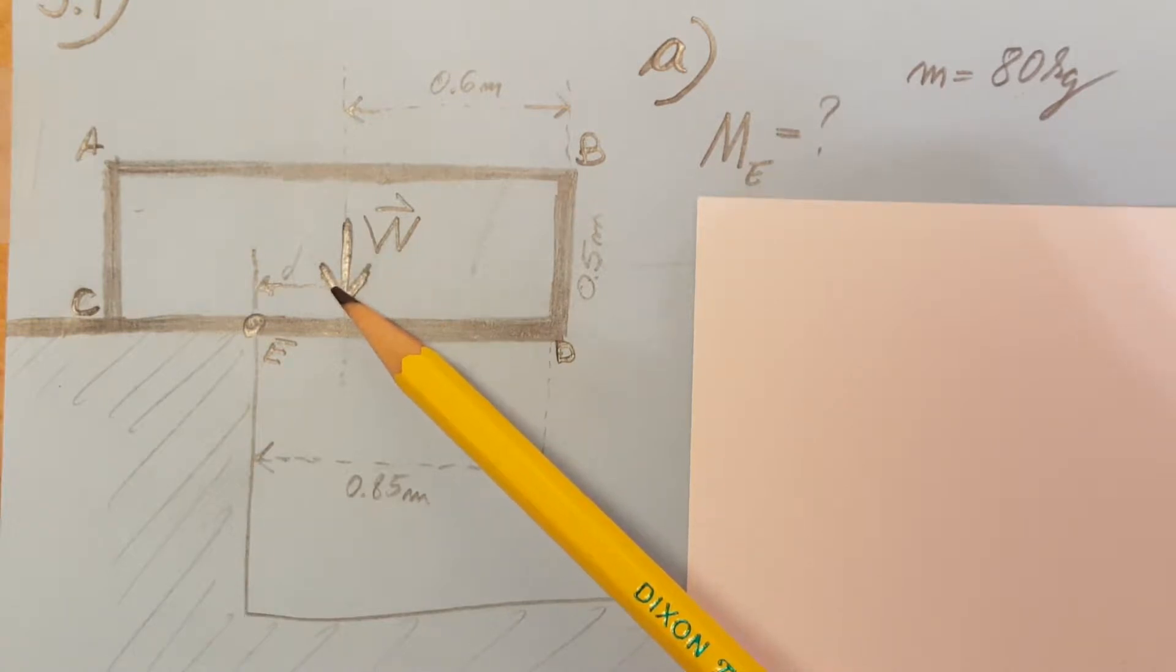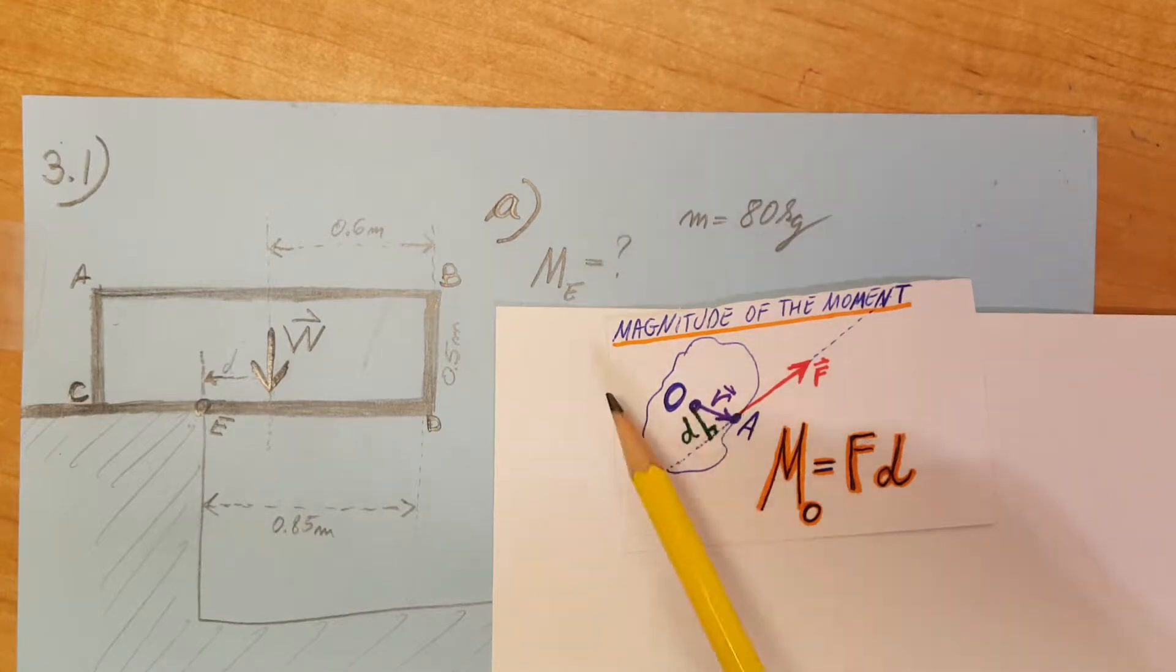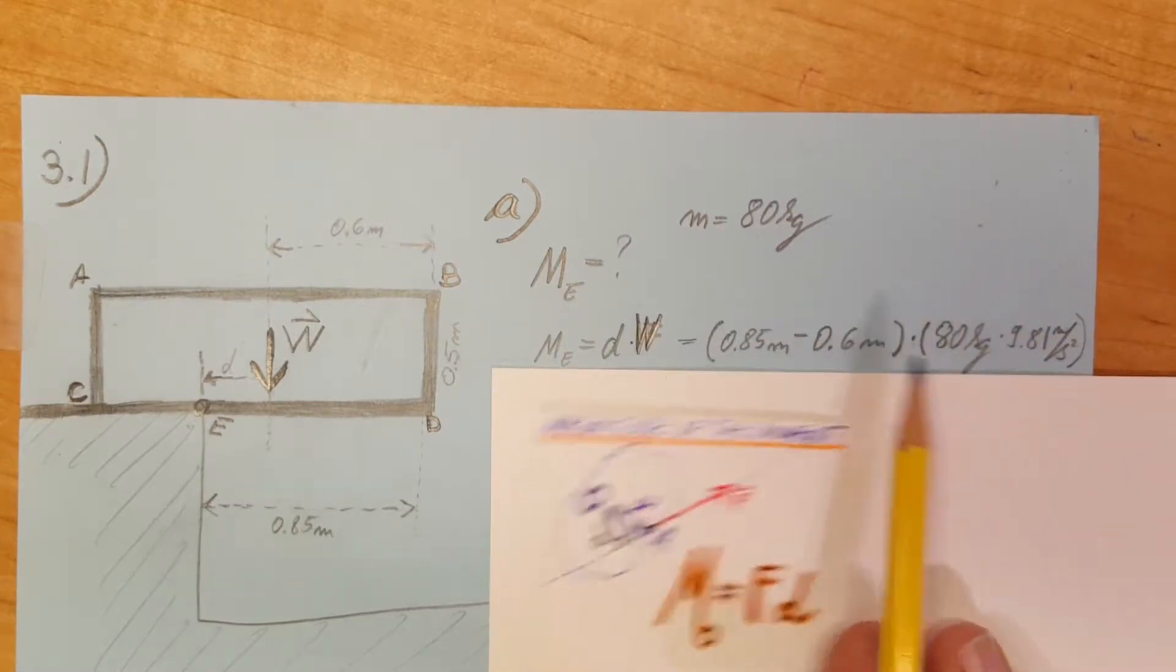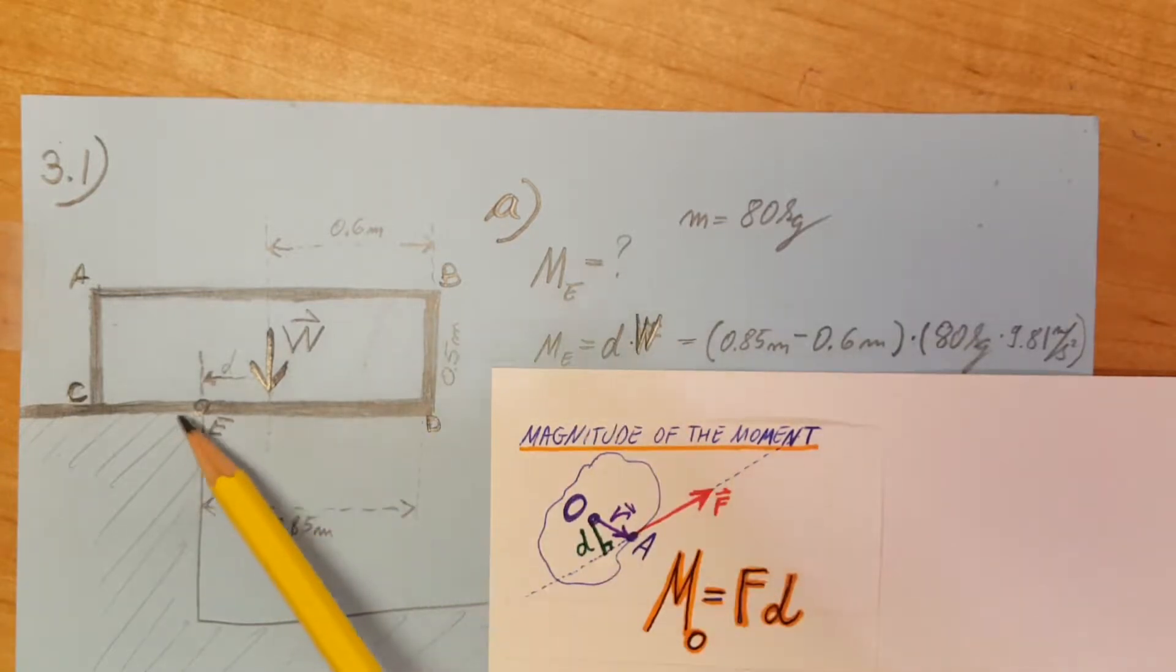Point E is right here. For this we're going to use the formula for the magnitude of the moment of a force about a point, which is this. So we're going to have magnitude of the moment around point E equals r_W times the distance, which is the perpendicular distance from the point where we want to calculate the moment to the force.